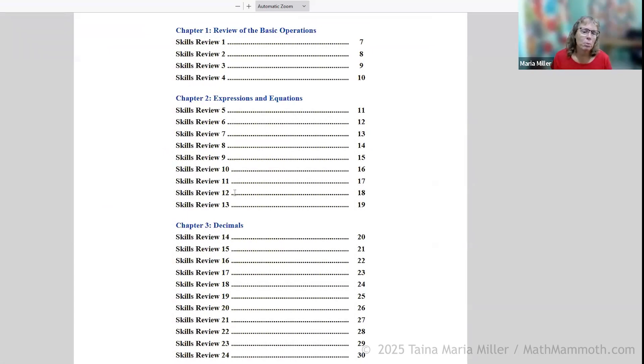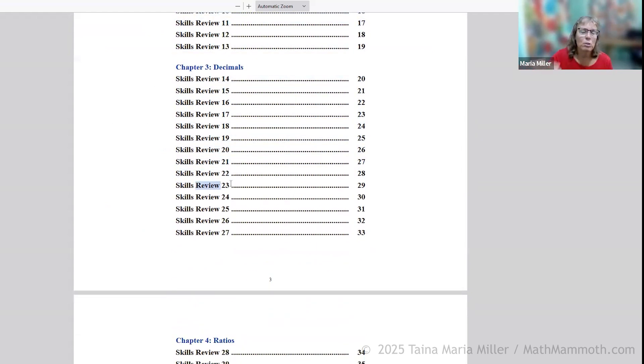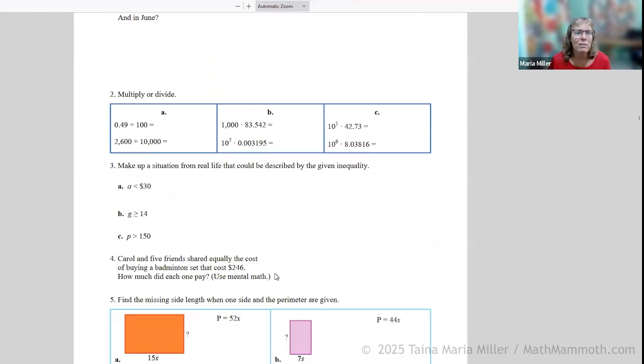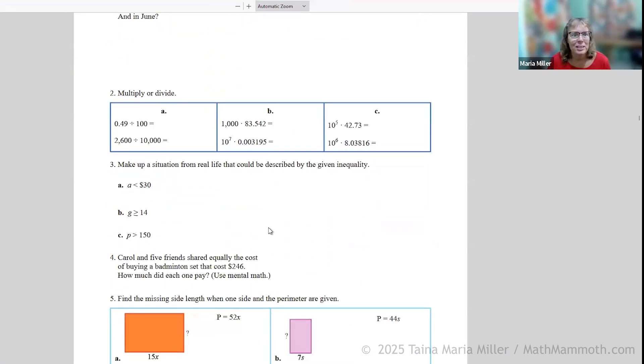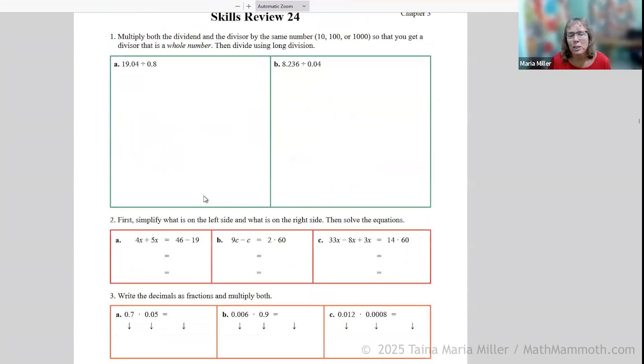Grade six skills review workbooks. So this is optional, supplemental. Skills review nine over here matches chapter two. Okay. So it has concepts from that chapter and chapter one. And this one here would have concepts from chapters three, two, and one, and so on. They just look like the mixed reviews, the spiral review of concepts, all kinds of different topics. And these are usually one page worksheets.